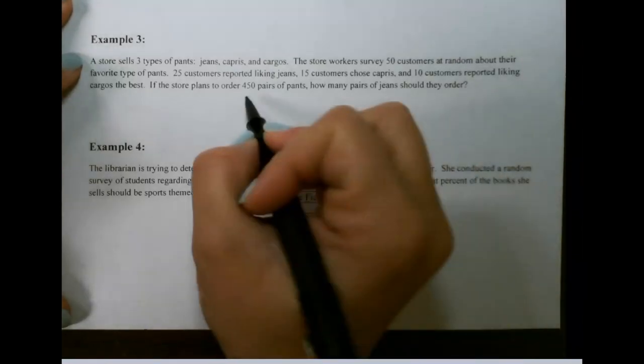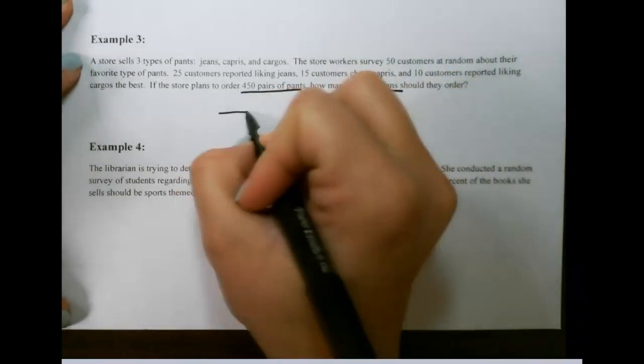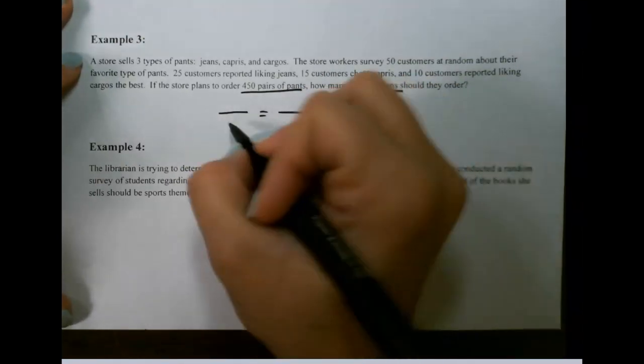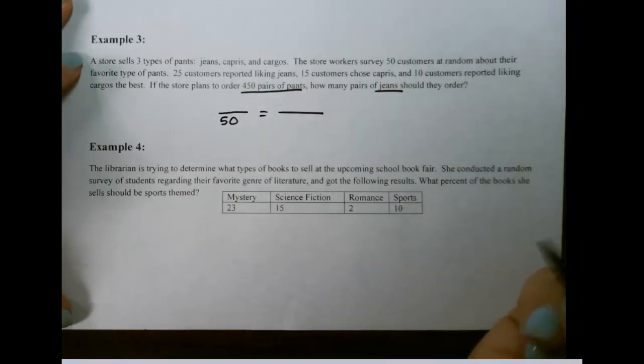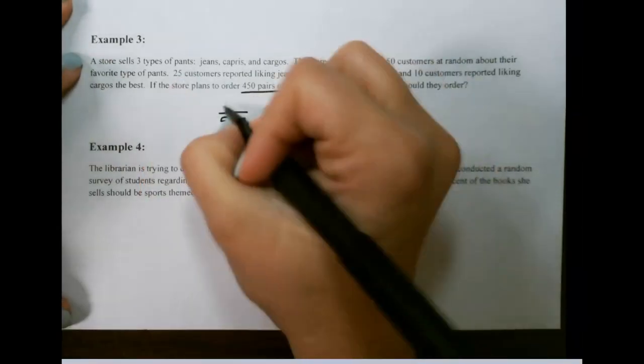We have to look at what we're looking for. We'll use a proportion here, because we can't use our other method of finding a percent. We have 50 total that were surveyed. And of those 50 people, how many liked jeans? That would be 25.